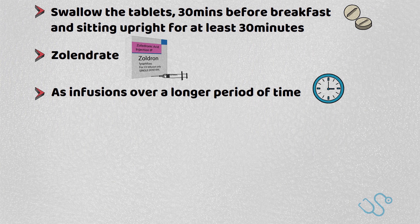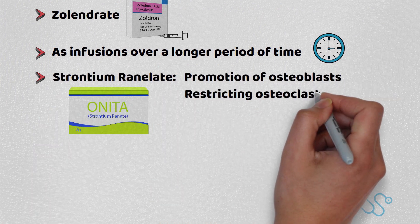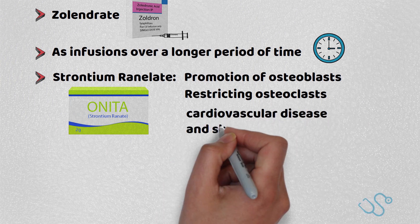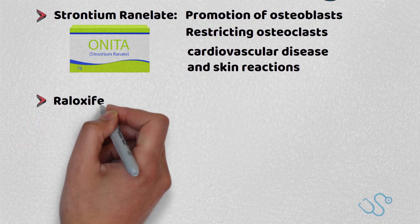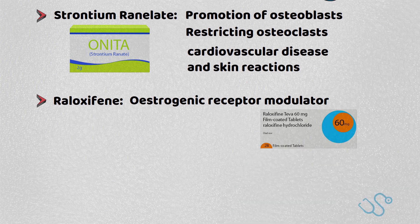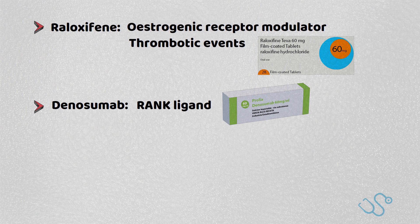If bisphosphonates aren't tolerated, strontium or raloxifene are usually considered. Strontium works by increasing the deposition of bone by promoting osteoblasts and restricting osteoclasts. It should only really be prescribed by specialists, given that there's a risk of cardiovascular disease and skin reactions. Raloxifene is considered a selective oestrogen receptor modulator and has good evidence supporting it in spinal and hip osteoporosis, but again does cause thrombotic events. Denosumab, which is a newer drug, is a RANK ligand inhibiting monoclonal antibody that helps reduce osteoclast production and is given as an injection. In some centres, this is included as second-line treatment after alendronate, ahead of strontium.